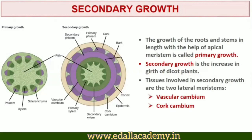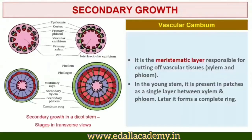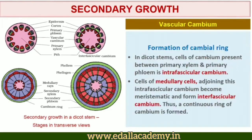Let's begin with vascular cambium. The meristematic layer responsible for cutting off vascular tissues — xylem and phloem — is called vascular cambium. In the young stem, it is present in patches as a single layer between the xylem and phloem. Later, it forms a complete ring. Let's see the formation of the cambial ring in dicot stems.